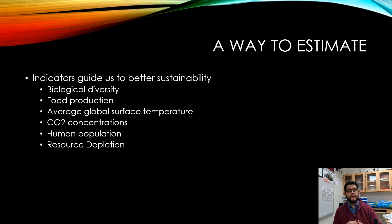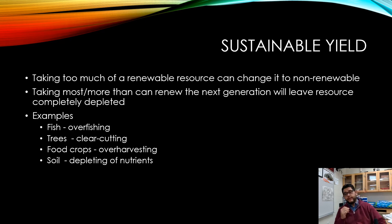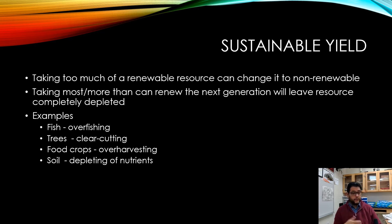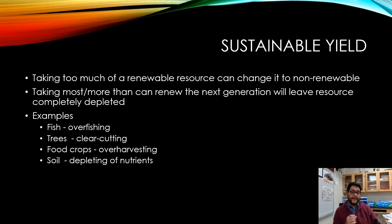Ultimately, the biggest source of environmental problems is how many people there are and how many resources they're consuming. If you can measure and slow population growth, you can slow resource depletion long-term. This brings us to the concept of sustainable yield — sometimes we take too much, causing a renewable resource to become non-renewable. Examples include overfishing, clear-cutting trees, over-harvesting food crops, and depleting soil nutrients.